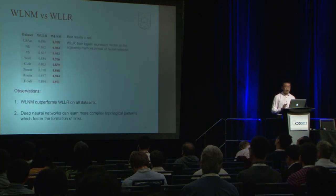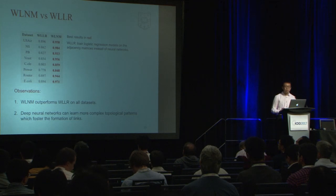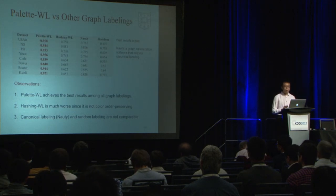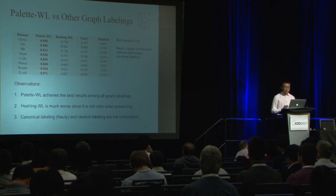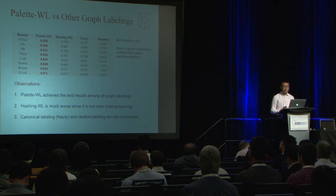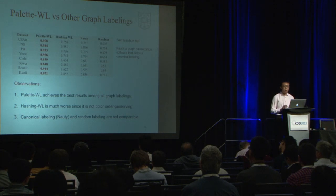In ablation studies, replacing the neural network in WLNM with a logistic regression model causes a large performance drop, proving the importance of neural networks for learning complex and nonlinear topological patterns that drive link formation. We also compare Palette WL against several other graph labeling methods; Palette WL performs significantly better than hashing WL, canonical labeling, and random labeling. The original hashing WL is not comparable since it cannot preserve color order and leads to chaotic final orderings, validating the importance of Palette WL in subgraph encoding.